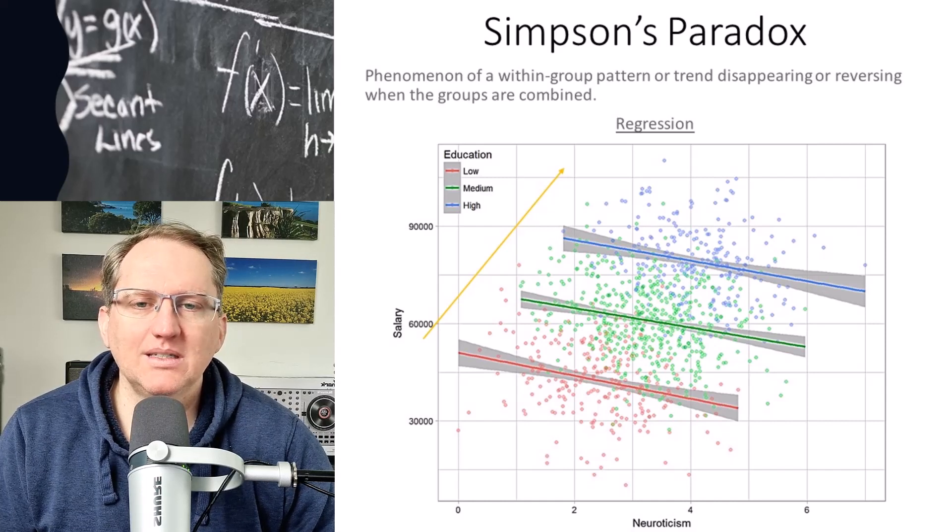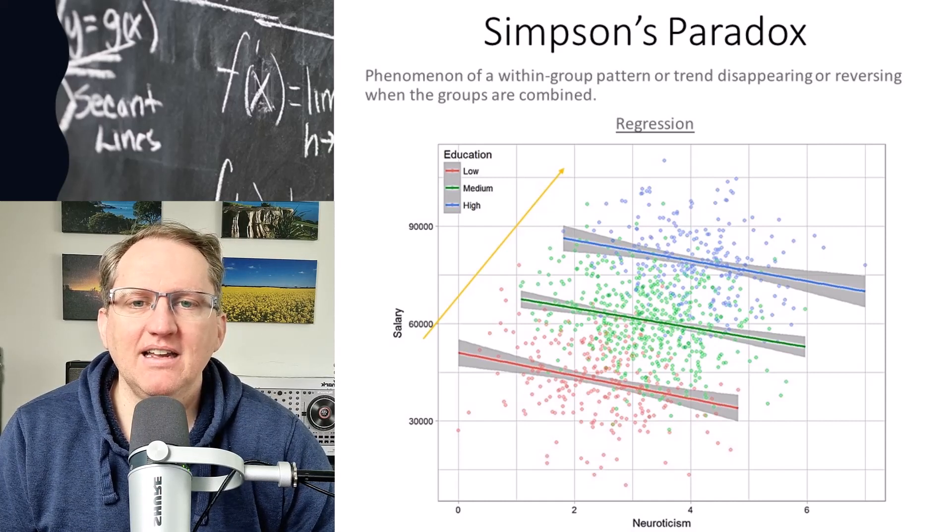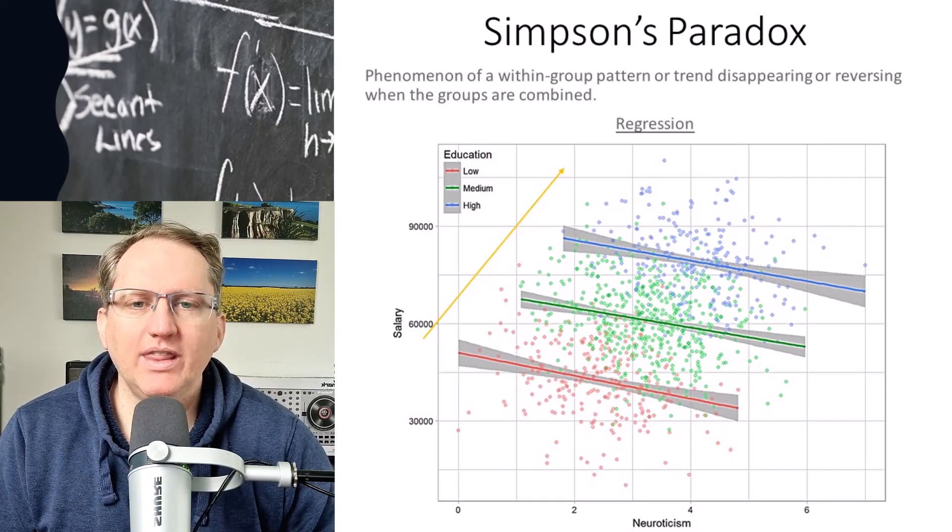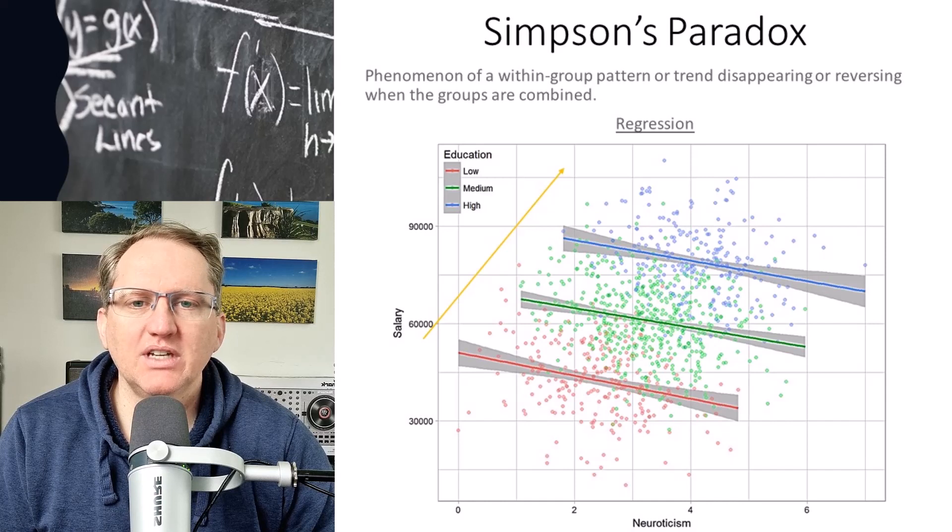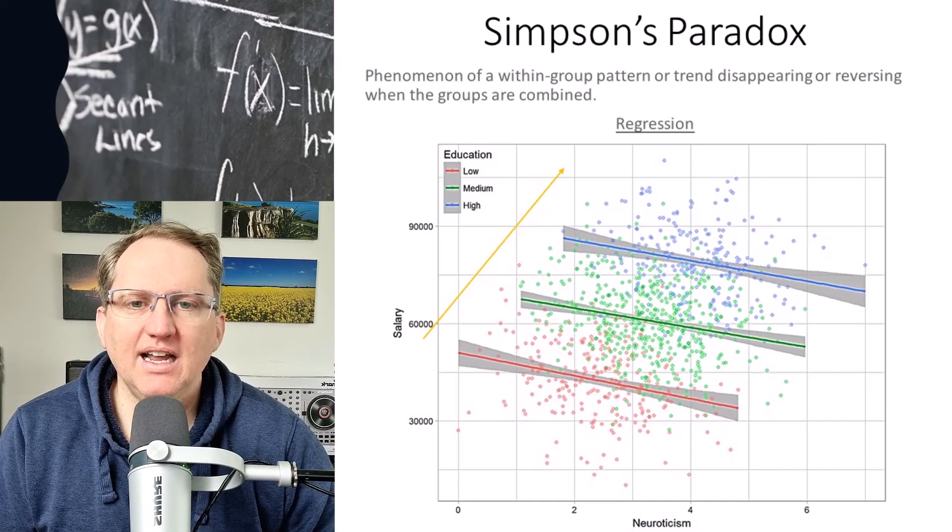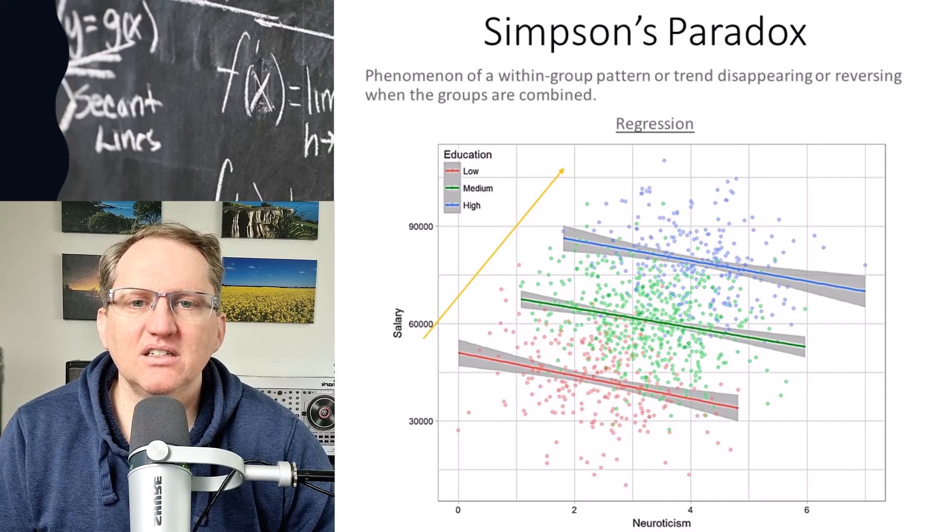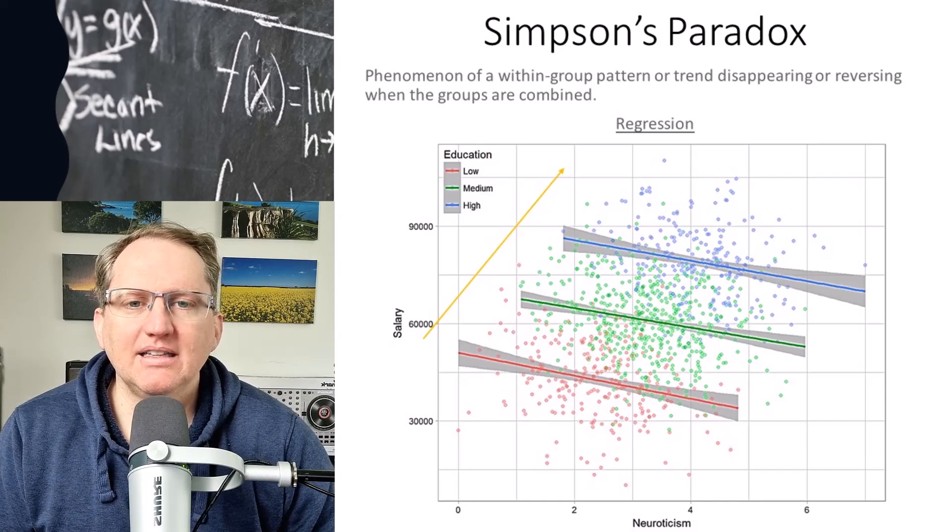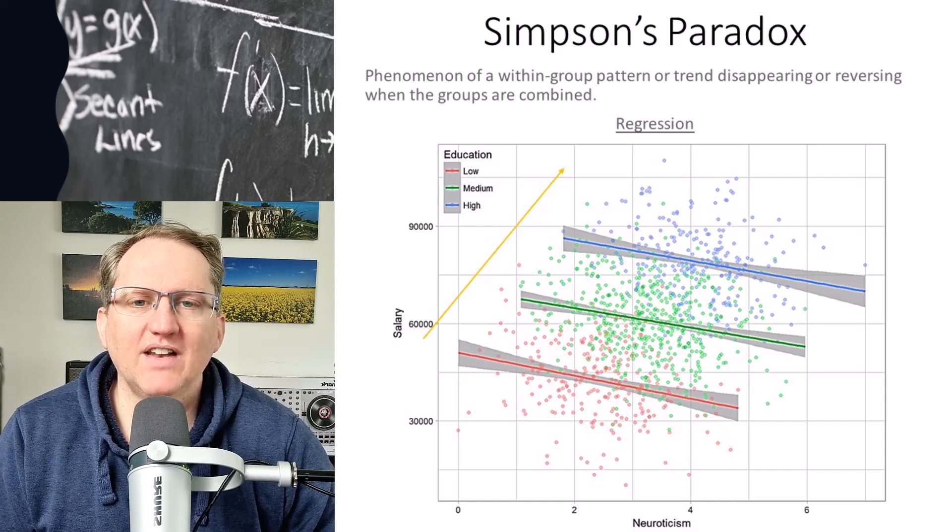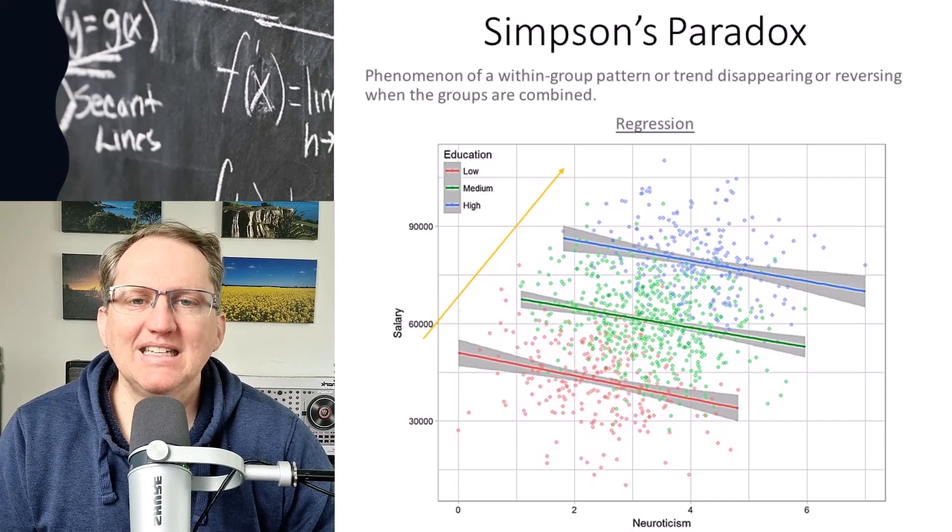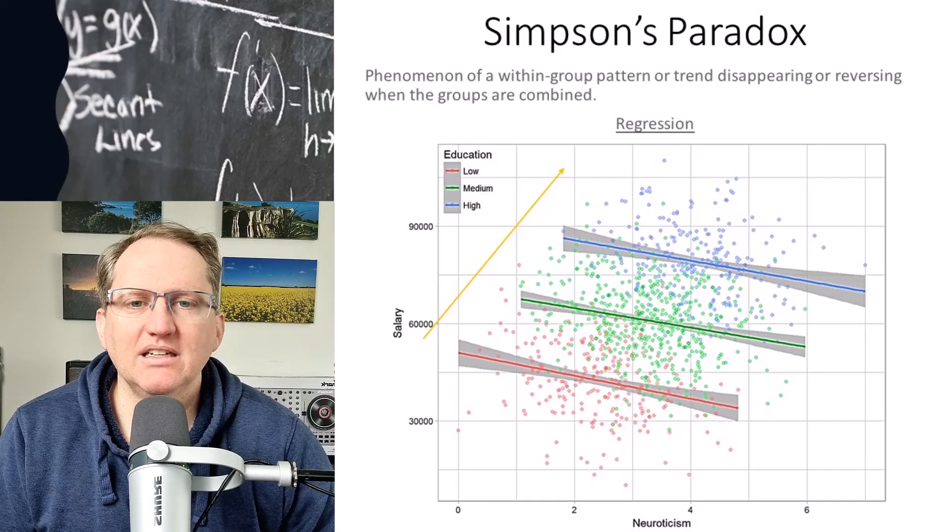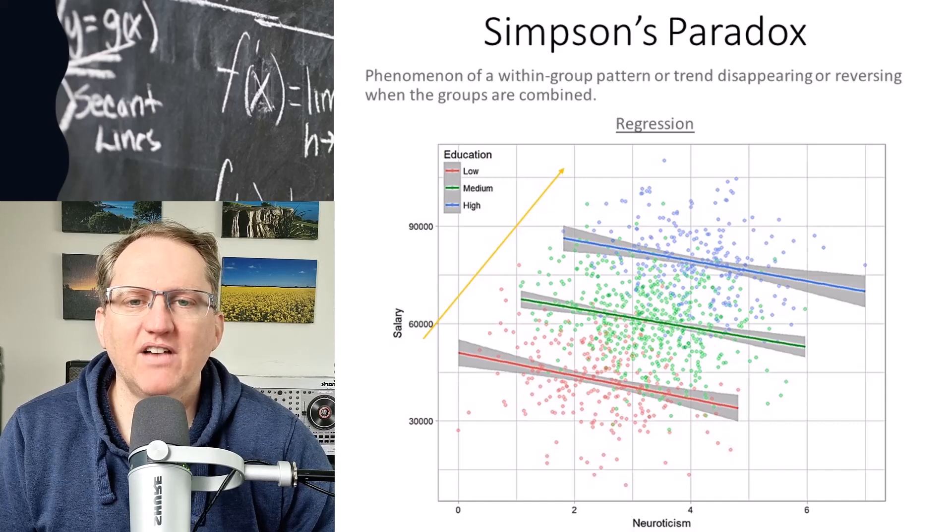If we fit neuroticism against salary and we control for the education levels, we actually find that within each of those three groups there is a negative trend. So higher levels of neuroticism tend to lead to higher salaries. If we were not looking carefully at our data, we could have quite easily missed this and concluded that higher neuroticism led to higher salaries rather than vice versa.